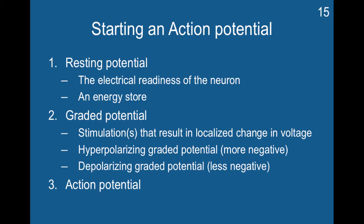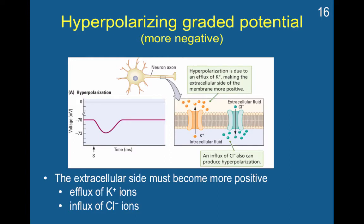These graded potentials are going to give rise to an action potential, which we'll speak about more shortly. Here is an example of a hyperpolarizing graded potential. What happens is the extracellular side of the cell must become more positive and the inside of the cell must become more negative with respect to the outside. For the extracellular side to become more positive, there is an efflux of potassium ions — potassium ions leave the cell, making the outside more positive. There is also an influx of chlorine ions, which are negative, so this influx from outside to inside makes the inside of the cell more negative. This causes hyperpolarization.